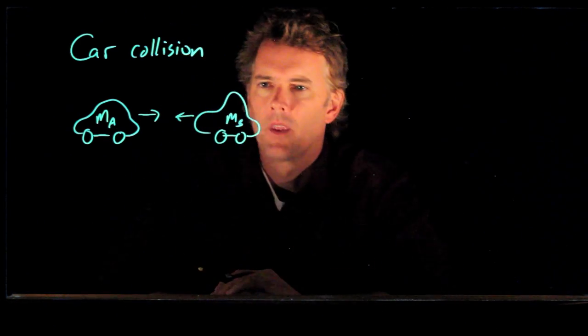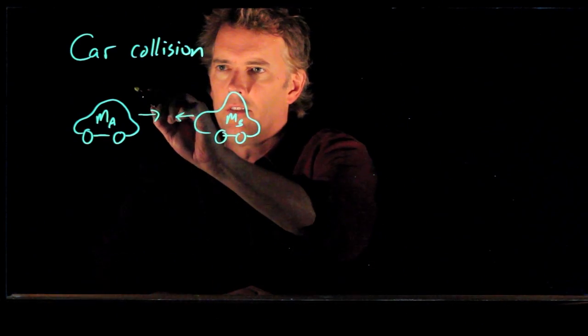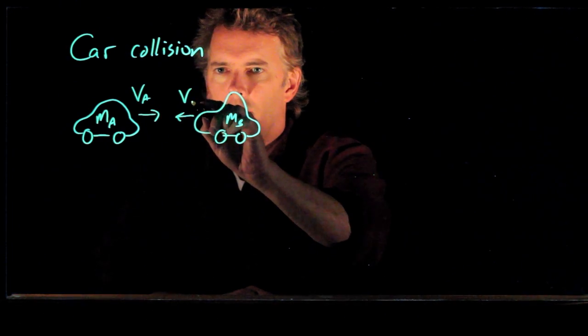We'll call that M sub B. And they have some speeds. This is V A and this is V B.